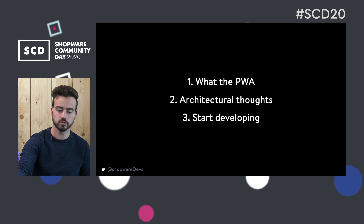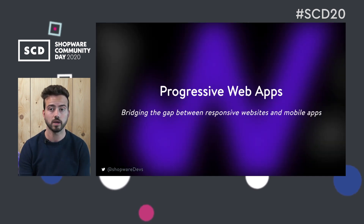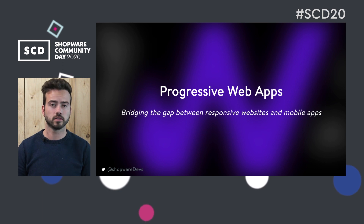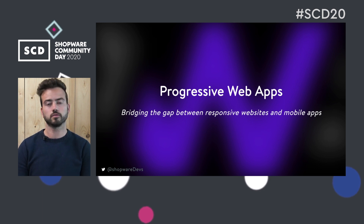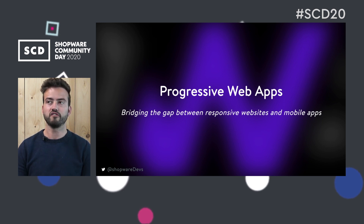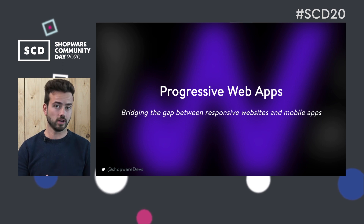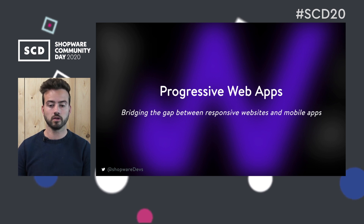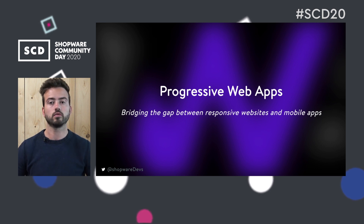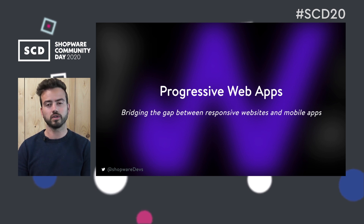Let's dive right in by talking about progressive web apps. Progressive web apps are a standard — a set of guidelines introduced by Google a couple of years ago. They tried to find a common set of browser features that would allow responsive websites to surpass mobile apps, because having a responsive website and a mobile app would mean a company has to develop two things at once when they're really trying to solve very similar problems.